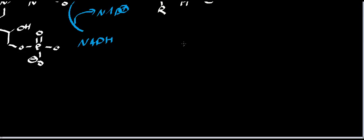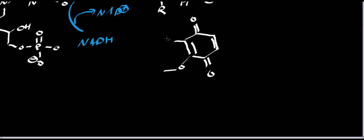To understand this, we need to look at the structure of ubiquinone. The structure has this ring with ether bonds, a methyl group, and an isoprene unit. The isoprene units are essentially five-carbon units — counting the carbons: one, two, three, four, five.